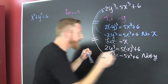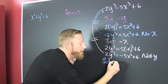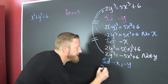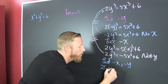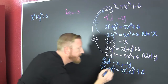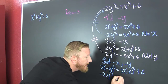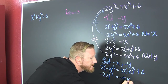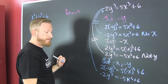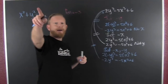Now let's check for origin symmetry. We let negative x and negative y. Substituting in, that gives two times negative y to the third equals five times negative x to the third plus six. That becomes negative two y to the third equals negative five x to the third plus six. Are these the same? No — because of that plus six, we can't get rid of the minus sign. So no origin symmetry.